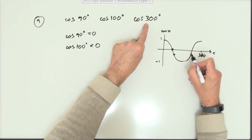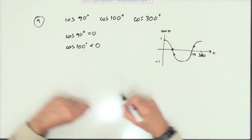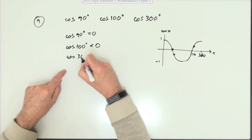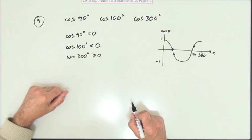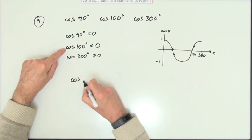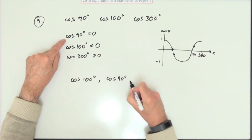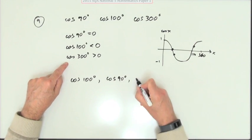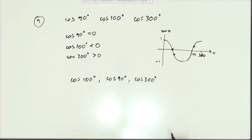And 300, well it cuts again at 270. So 300 is up here. Which means cos of 300 is more than 0. Well, there you go. The lowest one is cos 100 because it's a negative number. The middle one is cos 90 because it's 0. And the biggest one is cos 300 because it's greater than 0.